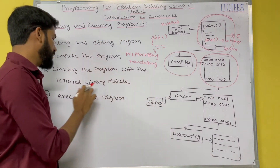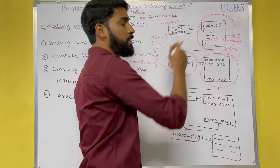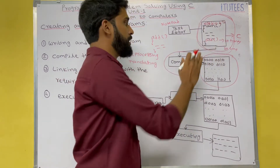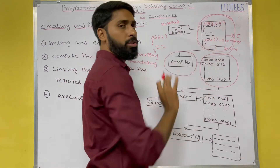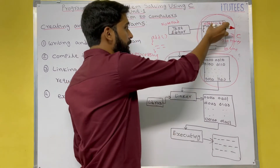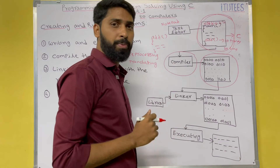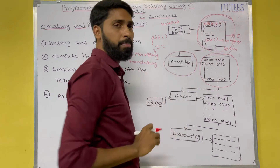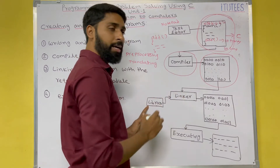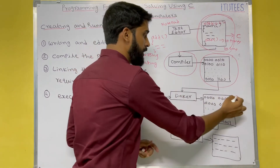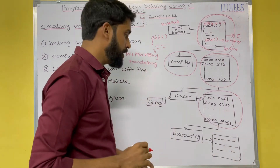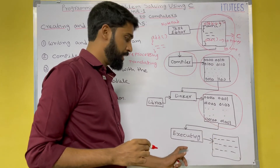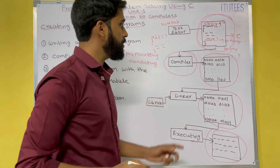The third step is linking the program with the required library modules. For example, in this program you are going to use stdio.h, which is a header file. The standard input and output function definitions are stored in this header file. The linker takes the definitions from the library and places them in the file. Now this file is executed — it is placed in primary memory by the processor — and then we get some output.